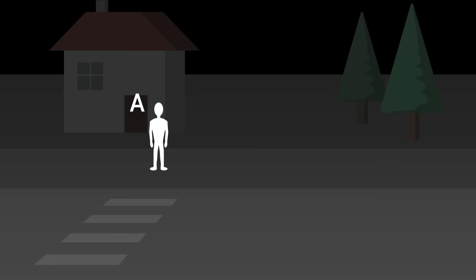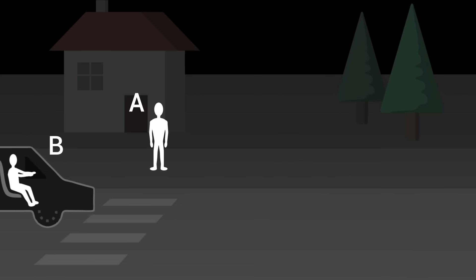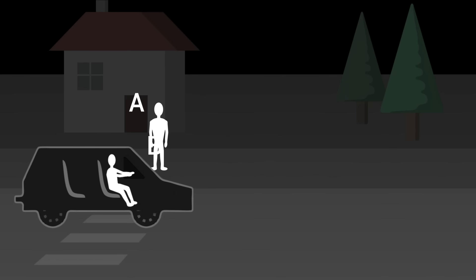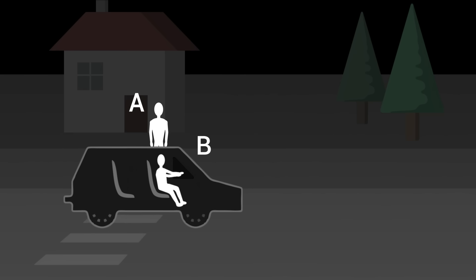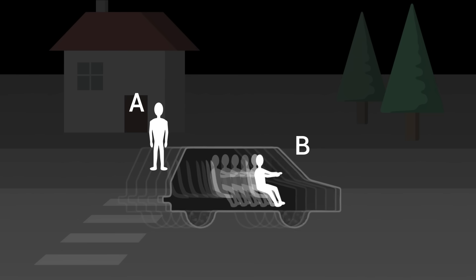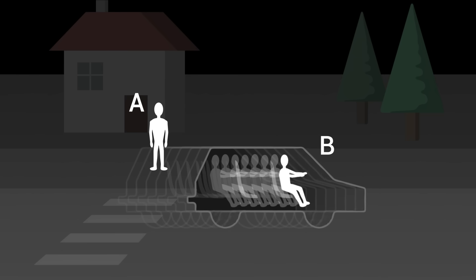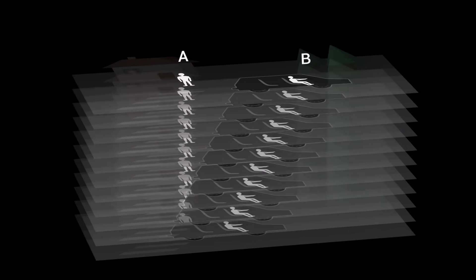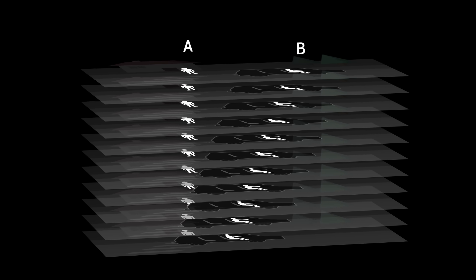Let's imagine a street in which a person A is standing on the sidewalk, and a person B is driving a car. The car moves forwards relative to the street, and to describe its motion, we will construct a space-time diagram. To do this, we freeze each instant and stack the images on top of one another. They thus form a block which represents the flow of time.